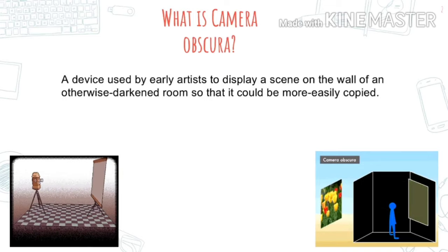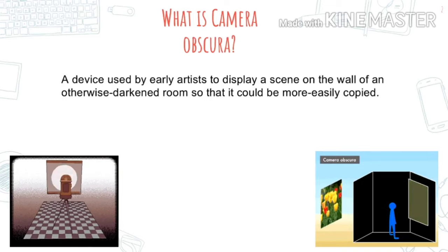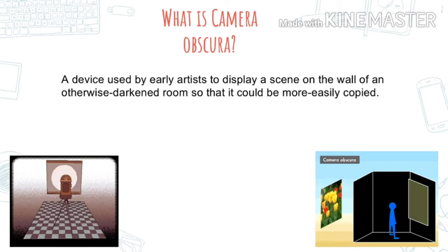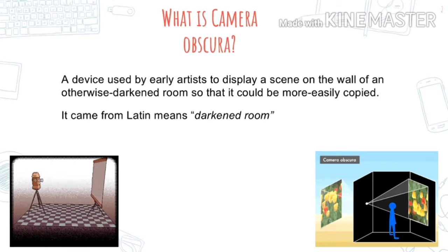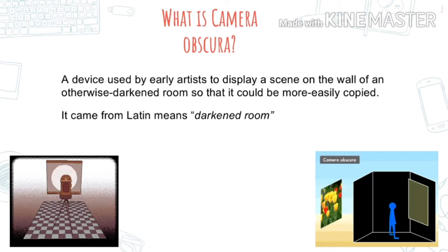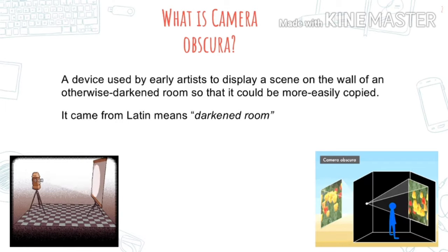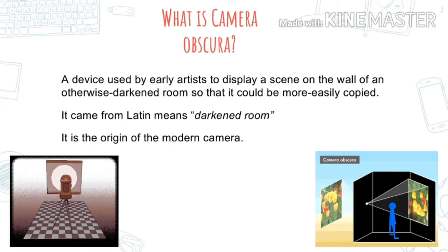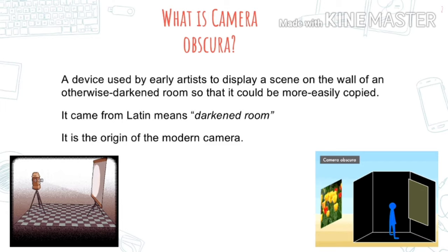Camera Obscura is a device used by early artists to display a scene on the wall of an otherwise darkened room so that it could be more easily traced. It came from Latin, which means 'darkened room.' So we need a dark place in order to produce a picture. And it is the origin of the modern camera.